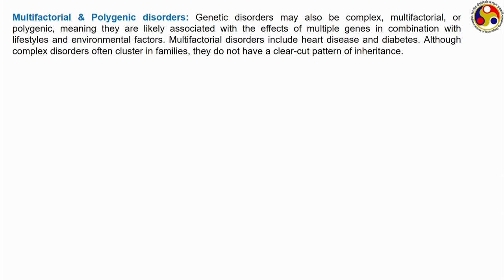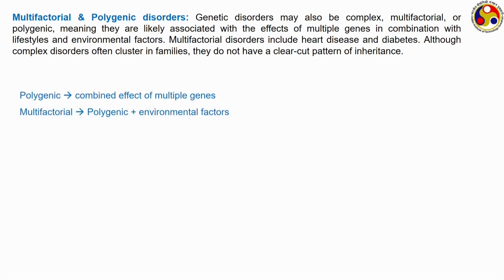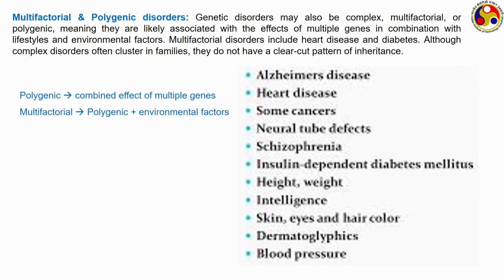Multifactorial and polygenic disorders involve more complicated effects. Polygenic refers to the combined effect of multiple gene interactions, while multifactorial refers to polygenic effects combined with environmental or lifestyle-related effects. Examples include lifestyle diseases like diabetes and heart disease, as well as genetically transmitted diseases such as Alzheimer's, schizophrenia, problems related to intelligence level, height and weight, and mutations in skin color or eye color.